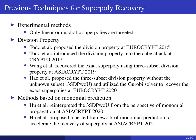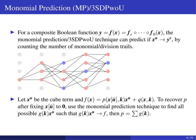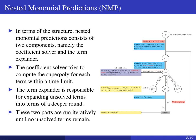Our work is a natural follow-up to their work. For a composite Boolean function setting x to y, the monomial prediction or division property allows us to predict if x^u appears in the ANF of y^v by counting the number of so-called monomial or division trails. For a cube term x^u, if we can determine all possible g(k, x^u) contained by f, we can determine the superpoly accordingly. From a structural perspective, the nested monomial predictions consist of two components: the coefficient solver and the term expander. The coefficient solver computes the superpoly for each term within a time limit, while the term expander expands all solved terms into terms of a deeper round. These two parts run iteratively until no unsolved terms remain.